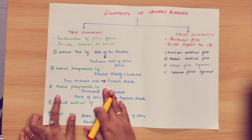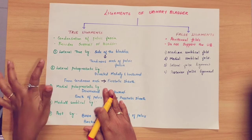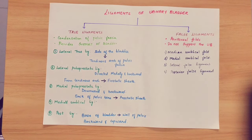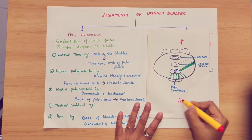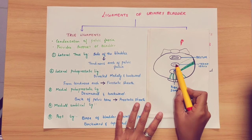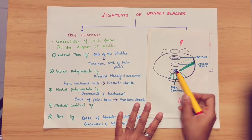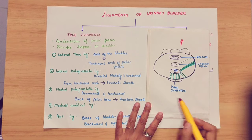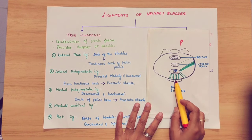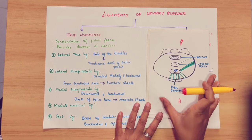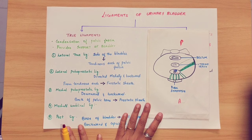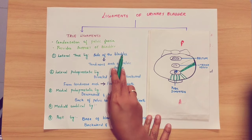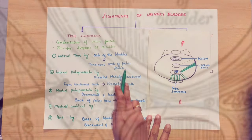Coming to the true ligaments of the urinary bladder. The first true ligament is the lateral true ligament. As you can see in this diagram, it is on the posterior and anterior side — the rectum and cervix side of the urinary bladder. The two pubic bones are connected to the pubic symphysis. We are going to describe these five ligaments. First: the lateral true ligament connects the side of the bladder to the tendinous arch of the pelvic fascia.